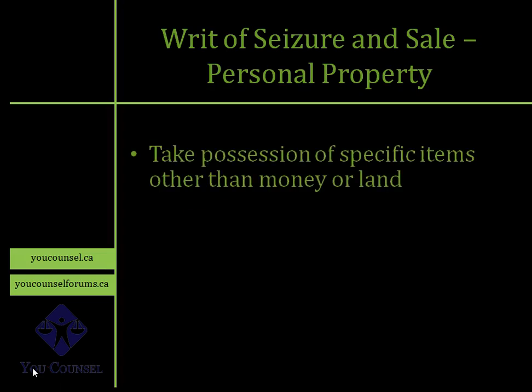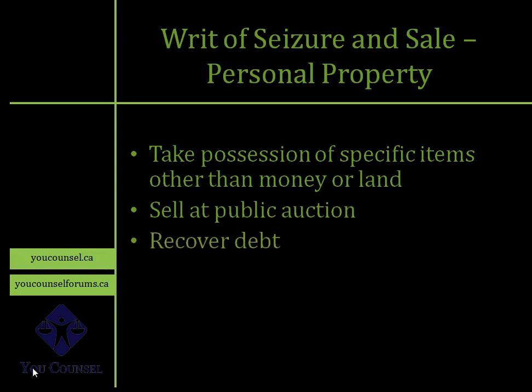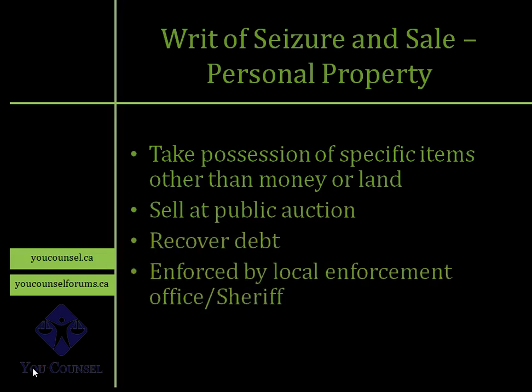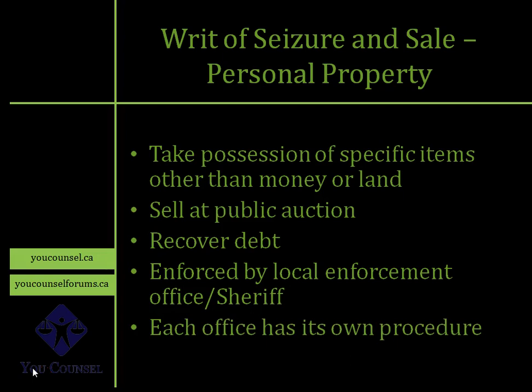Writ of Seizure and Sale of Personal Property essentially means that the debtor has certain personal property — as long as it's not money or land — you take over possession of that property, it is sold in a public auction, and the monies are recovered and paid back to you. You cannot do it yourself; it's done through the local enforcement office of that county, which is the sheriff. You contact them and there is a whole process to require the sheriff to take possession of that property, sell it in a public auction, and give you the money they recover.